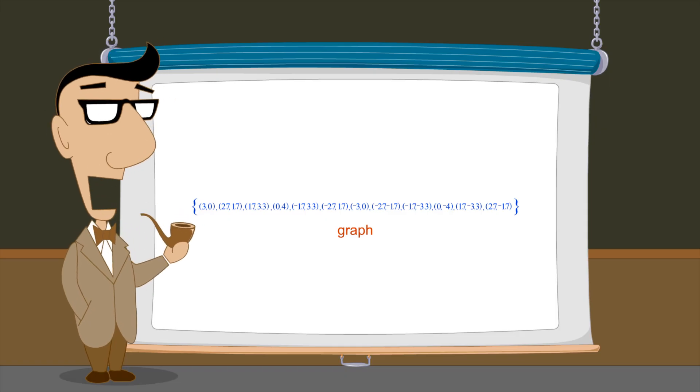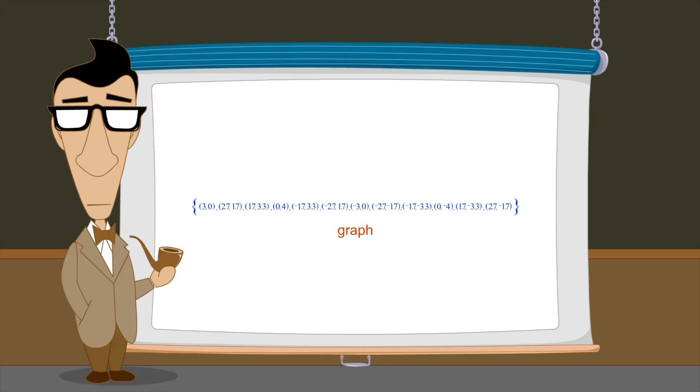So in a binary relation on R, the graph would be a set of ordered pairs of real numbers. Since Cartesian coordinates can be used to visually represent ordered pairs of real numbers, this is a way to visually represent the graph of a relation on R.